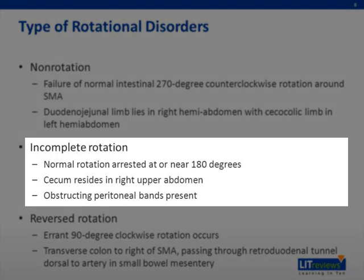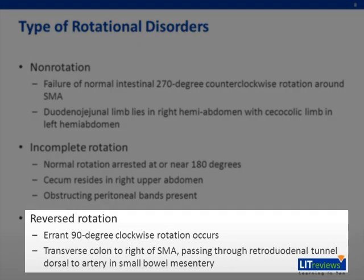In incomplete rotation, the normal rotation is arrested at or near 180 degrees. The cecum resides in the right upper abdomen and obstructing peritoneal bands are present. In reverse rotation, an errant 90 degree clockwise rotation occurs. The transverse colon is to the right of the SMA, passing through the retroduodenal tunnel dorsal to the artery in the small bowel mesentery.